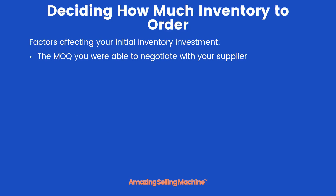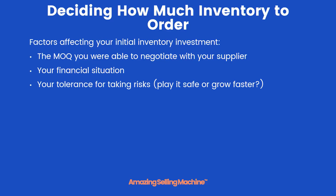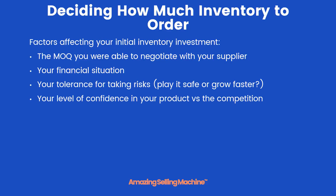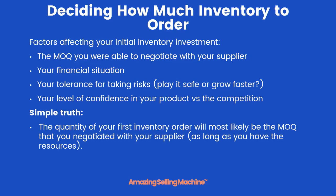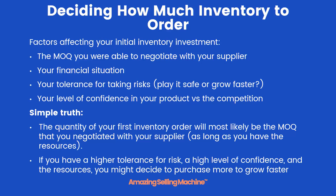Here are the factors to take into account when deciding how much inventory to order: the MOQ you negotiated with your supplier, your own financial situation, your tolerance for risk — whether you like to play it safe or want to grow faster — and your level of confidence in your product versus the competition. More than likely, the quantity of your first order will simply be the MOQ you negotiated, as long as you have the resources — this is what the majority of new sellers do. However, if you have a higher tolerance for risk, high confidence, and the resources, you might purchase more to grow faster. This is called taking a calculated risk.